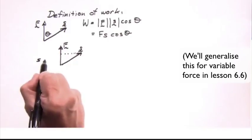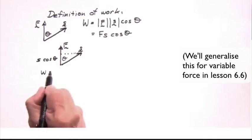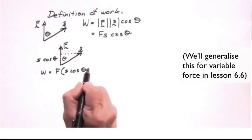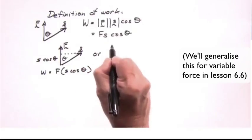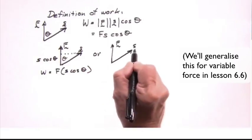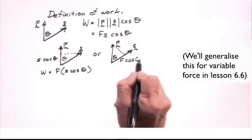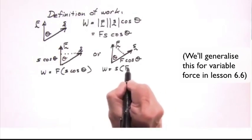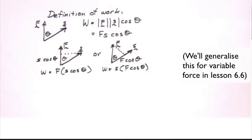F times S cos theta—in other words, F times the component of S in the direction of F. Or you could think of it as S times F cos theta—S times the component of F in the direction of S. This is what we call a scalar product of vectors.